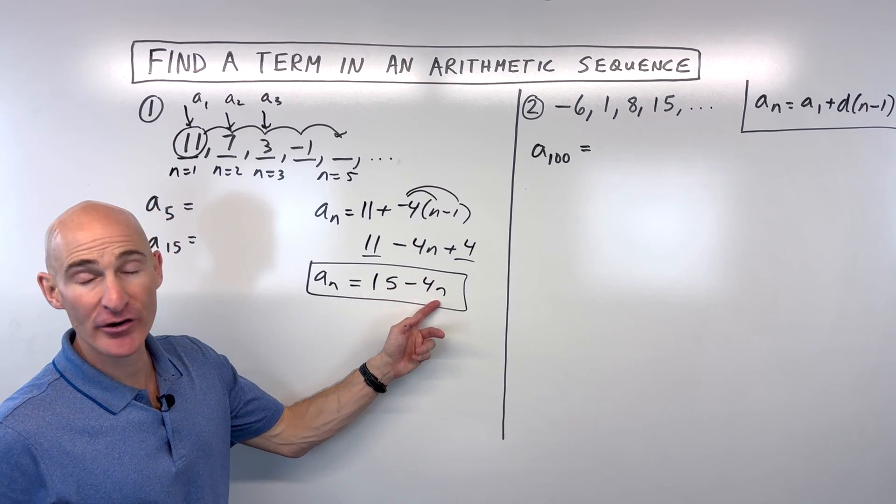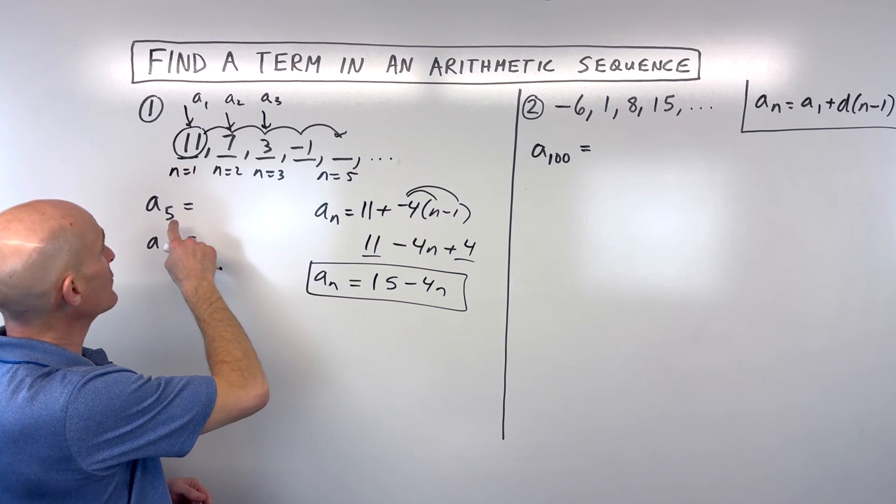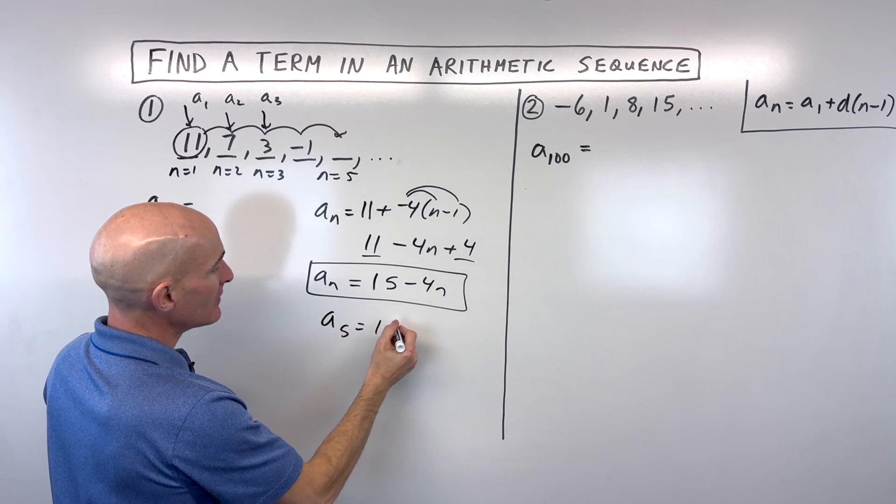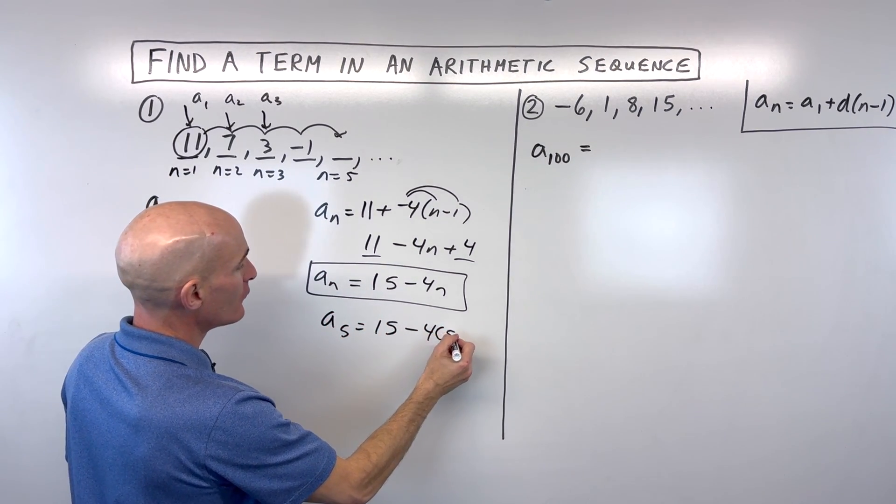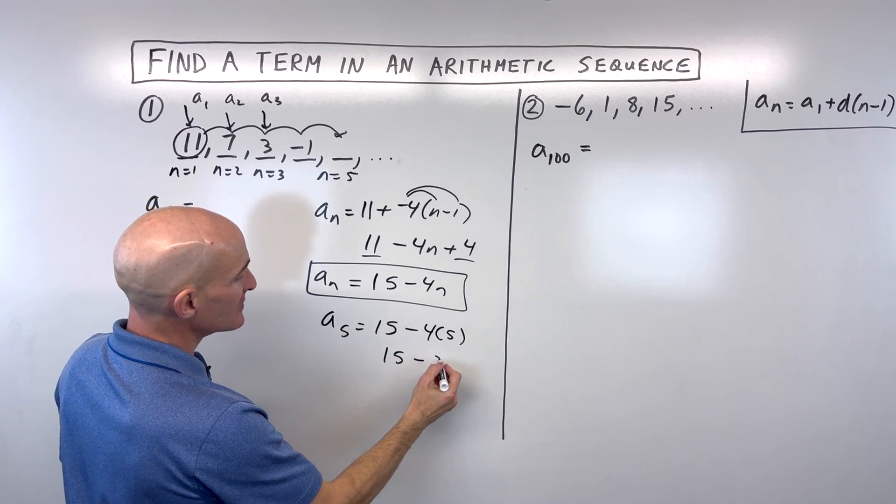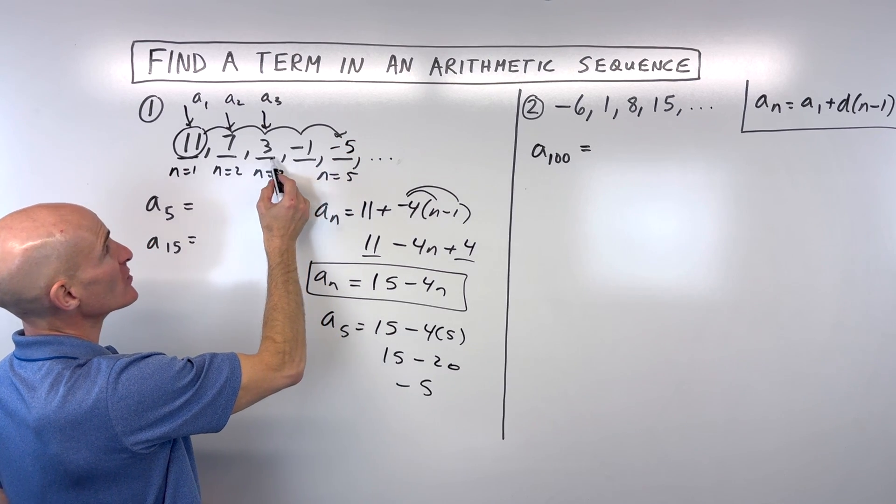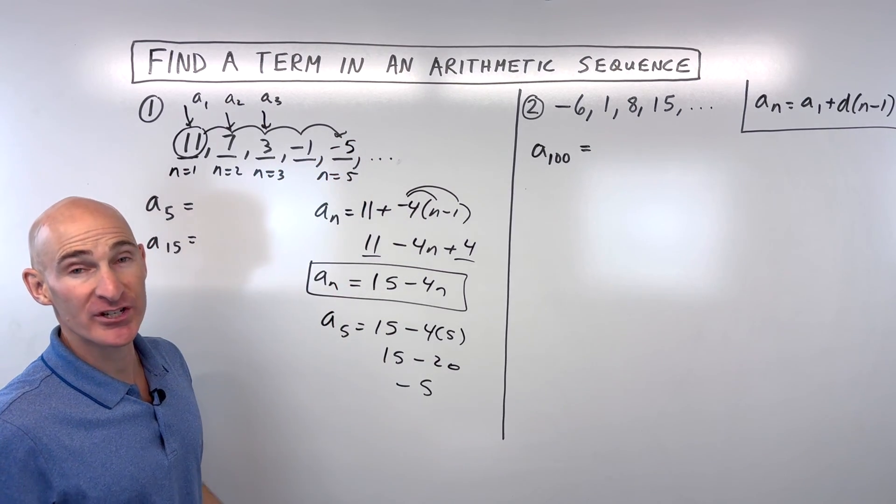In this case, let's say we want to find the fifth term. We've got a sub 5 equals 15 minus 4 times 5. That's 15 minus 20, which is negative 5, which we knew that this was negative 5, because we recognized that we were subtracting 4 each time.